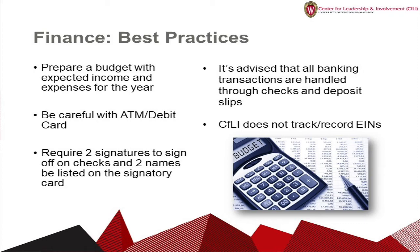If you do want to take out cash, we recommend going to the bank and getting a receipt for records purposes. Next, require two signatures to sign off on checks and two names to be listed on the bank account — this is helpful during transitions between student leadership and memberships. We advise that all banking transactions are handled through checks and deposit slips for accurate record keeping. Finally, in order to have an organizational bank account, your organization will need an Employer Identification Number, or EIN, from the IRS. The Center for Leadership and Involvement does not track or retain this information; organizations should contact their financial institution, which should have the number on file.